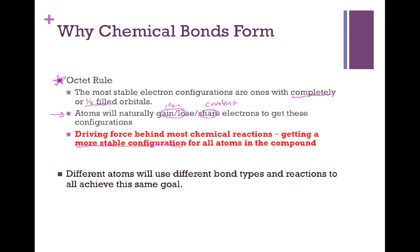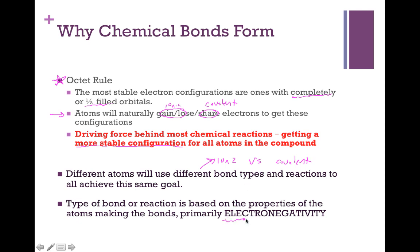Depending on the type of atoms you're dealing with, that determines whether ionic or covalent bonds form. What's going on with ionic versus covalent has a lot to do with electronegativity, which we identified in the previous chapter. The type of bond is based on the properties of the atoms making those bonds — primarily electronegativity. When those electronegativities are similar, we'll get covalent bonding. When those electronegativities are different, we'll get ionic bonding.